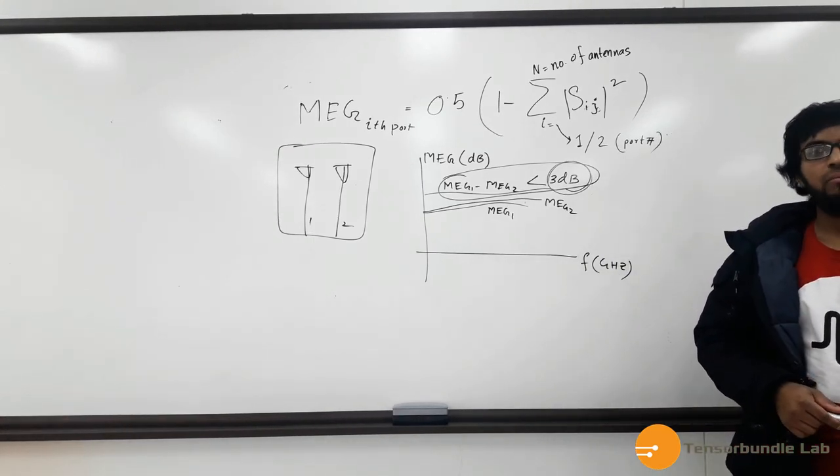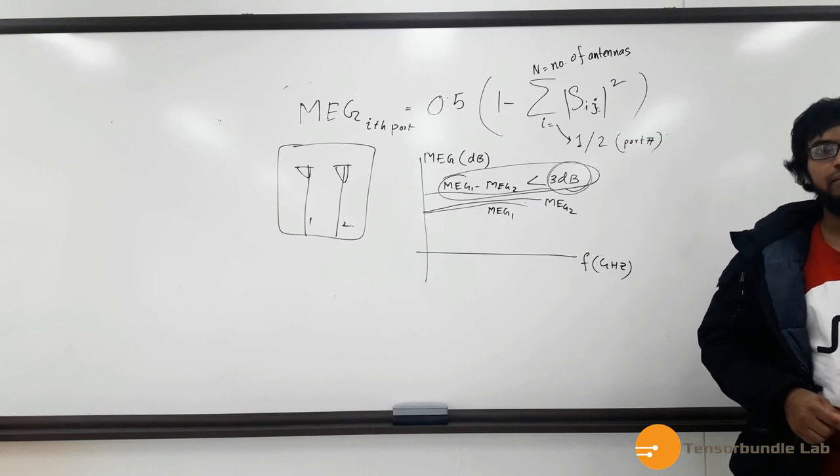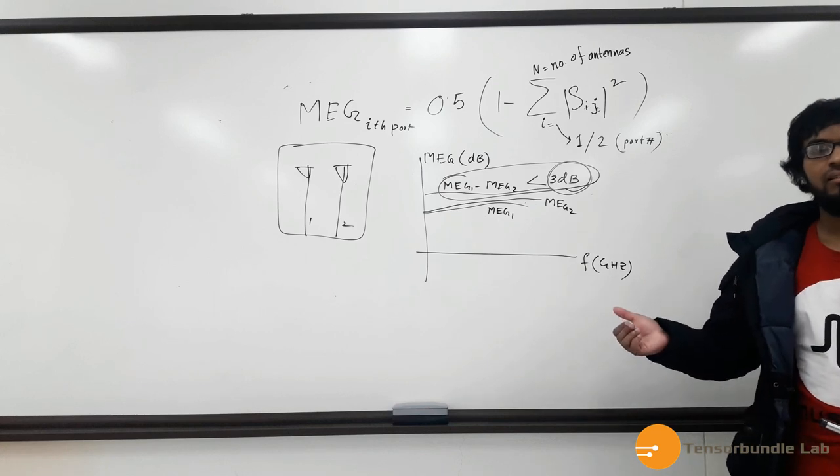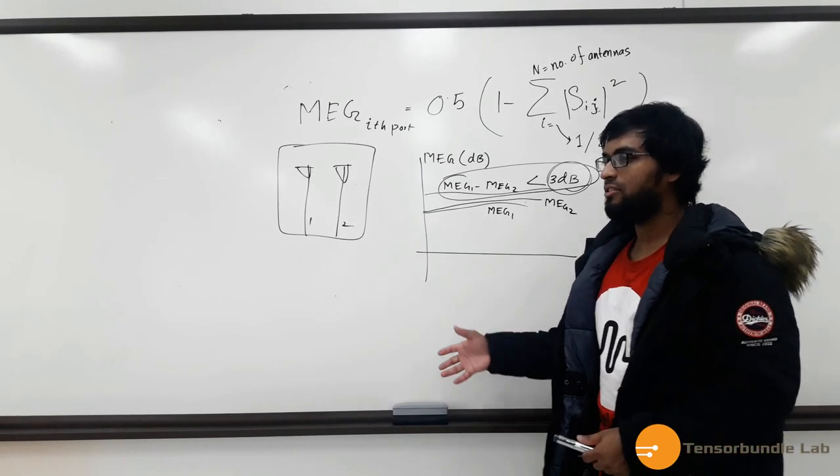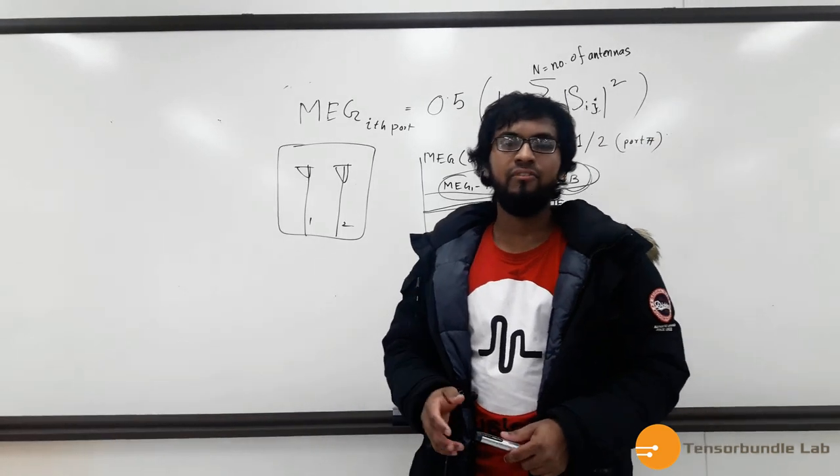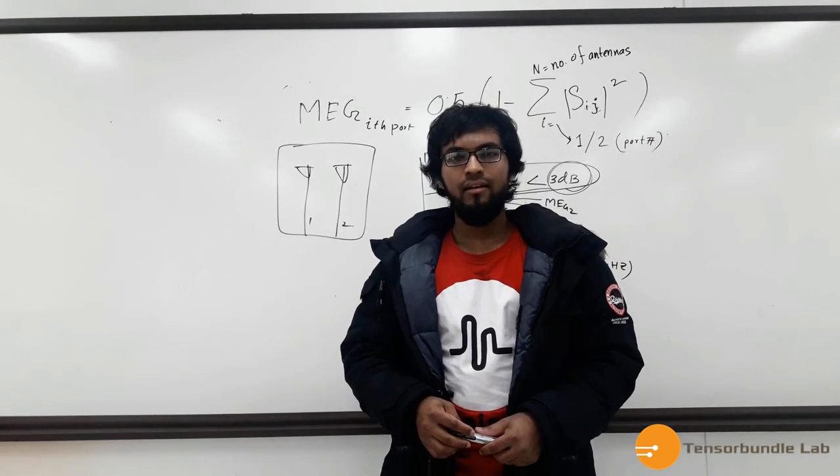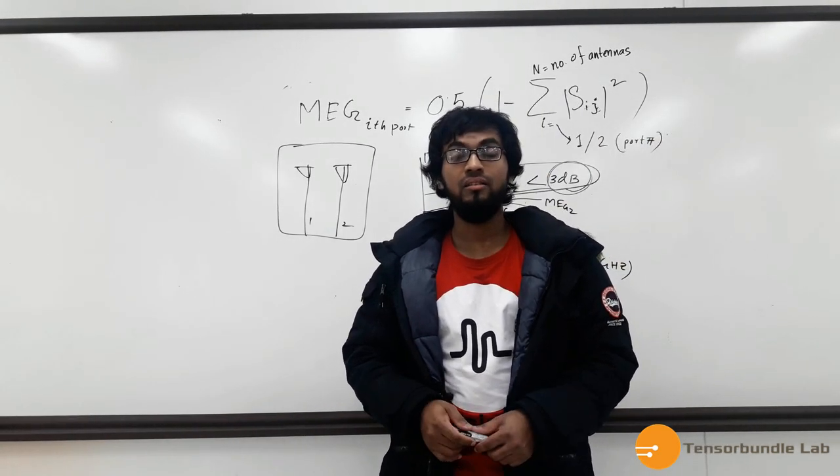So these two parameters are very important because whenever we write a research paper about MIMO antenna system or technical reports, we do provide this data. And I hope that this short lecture has clarified the concept of MEG and CCL and how to plot it in MATLAB.